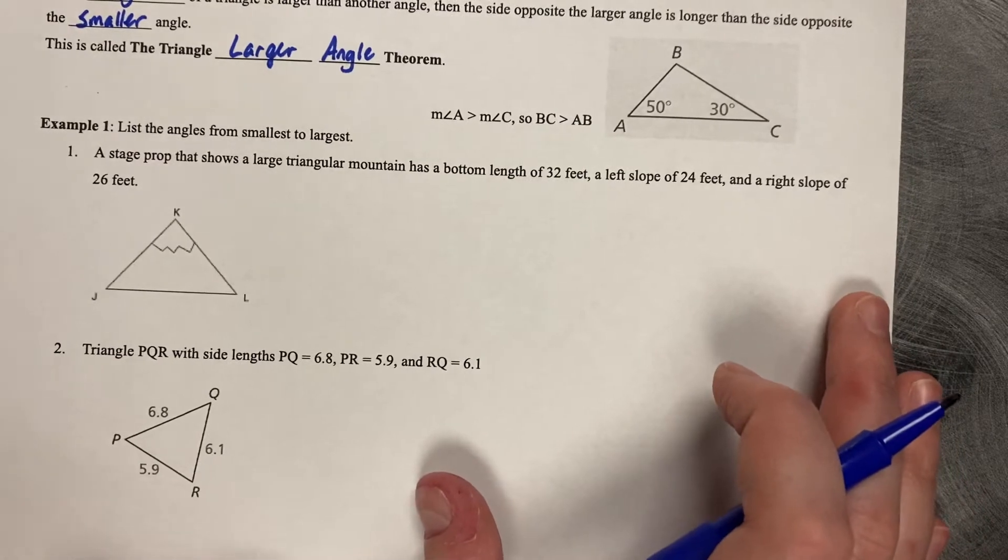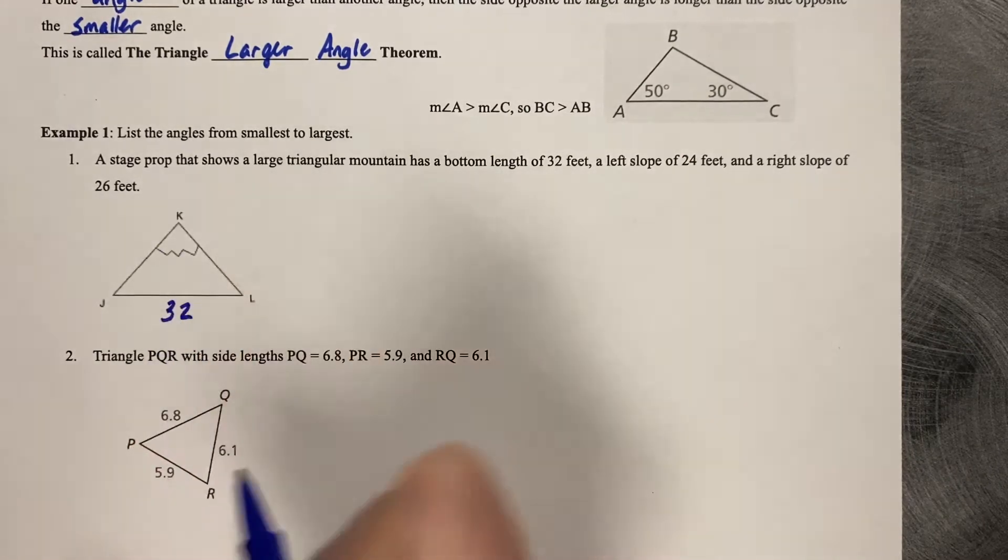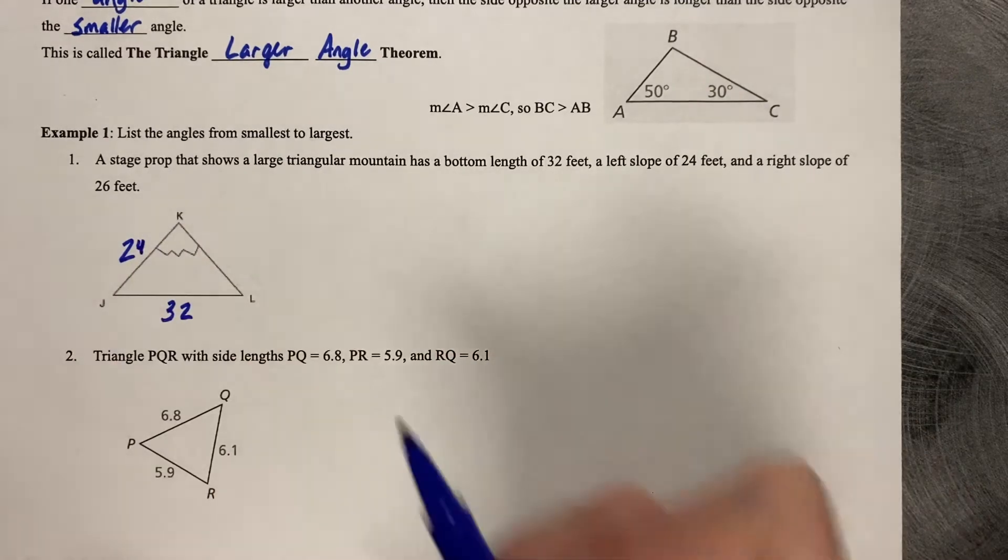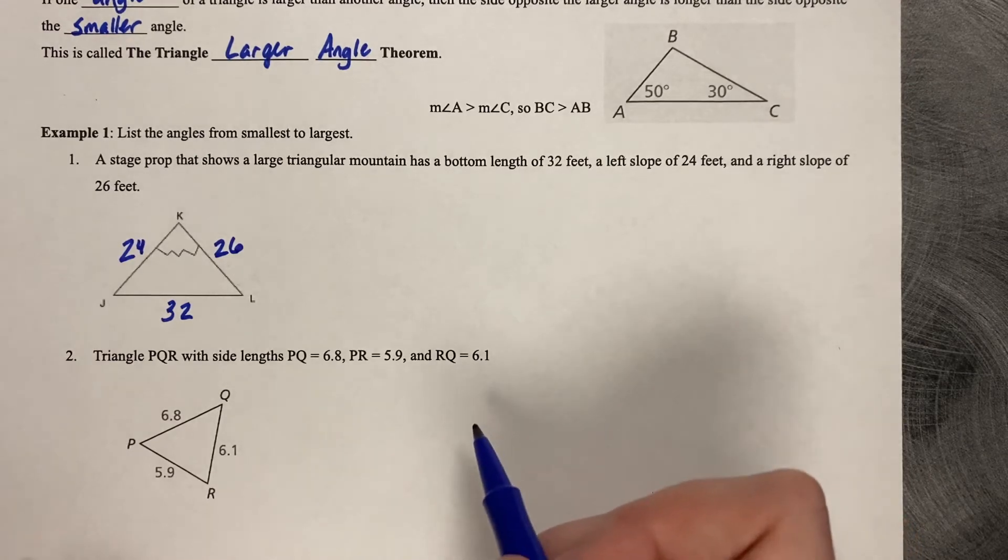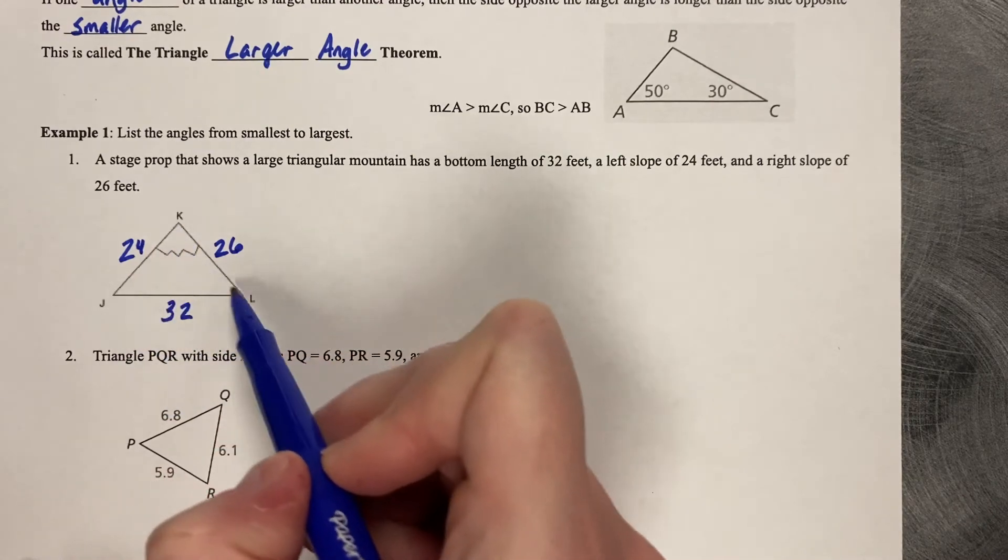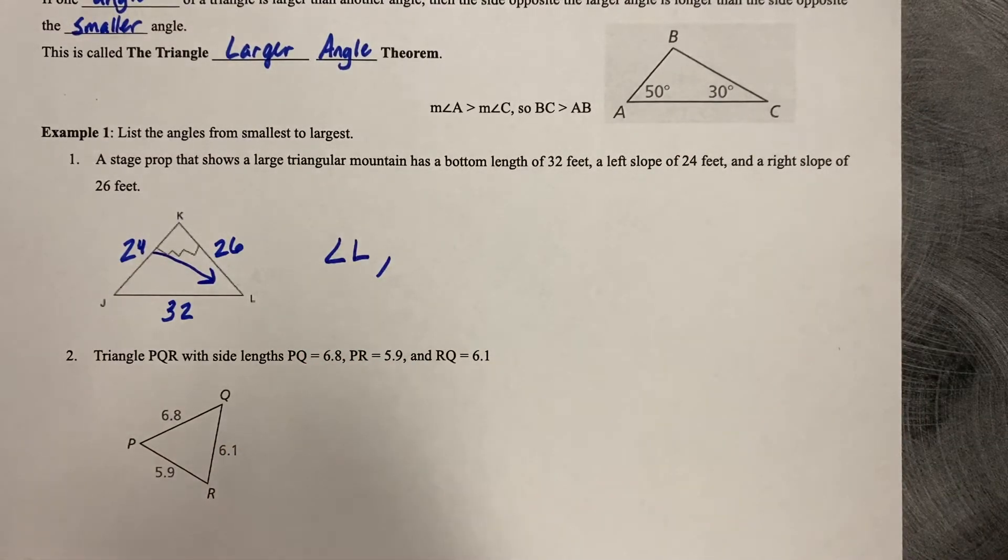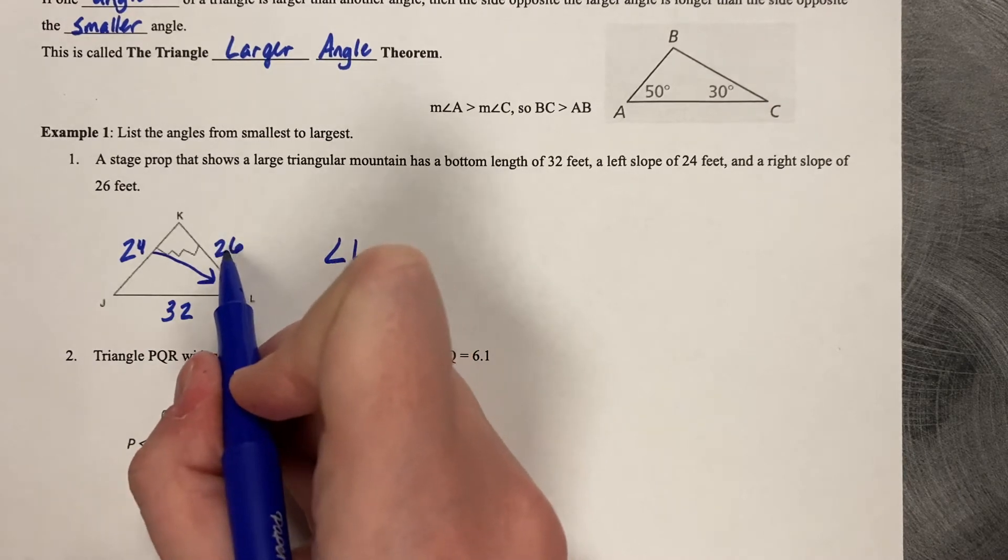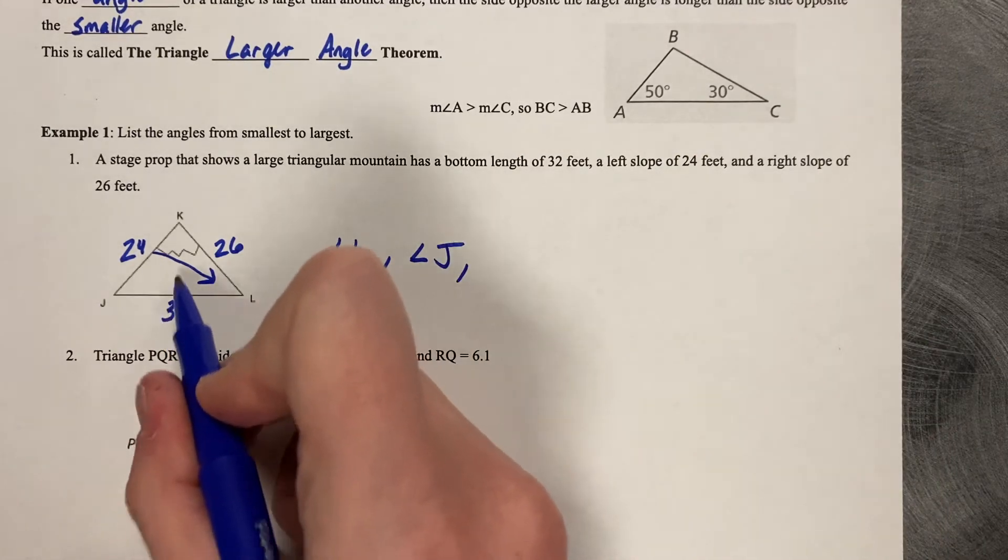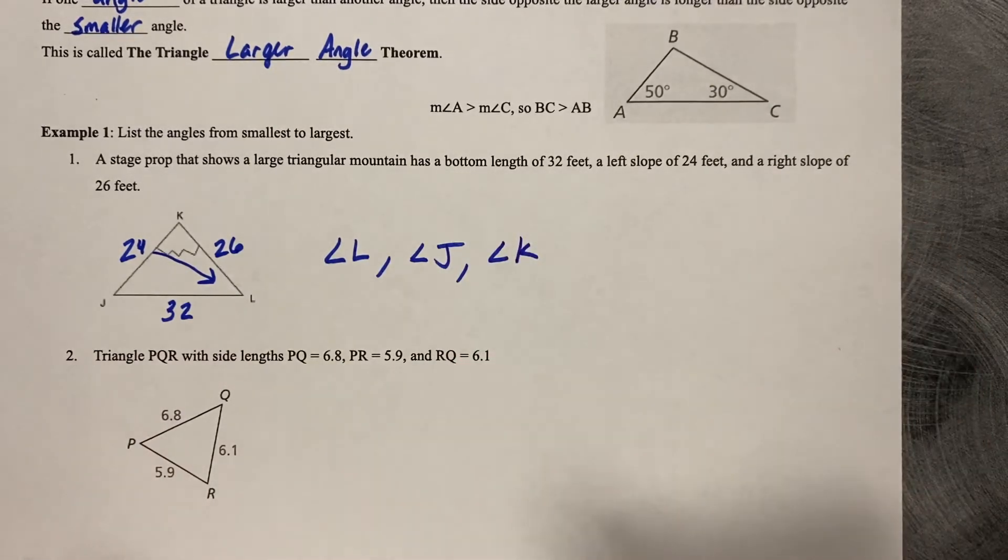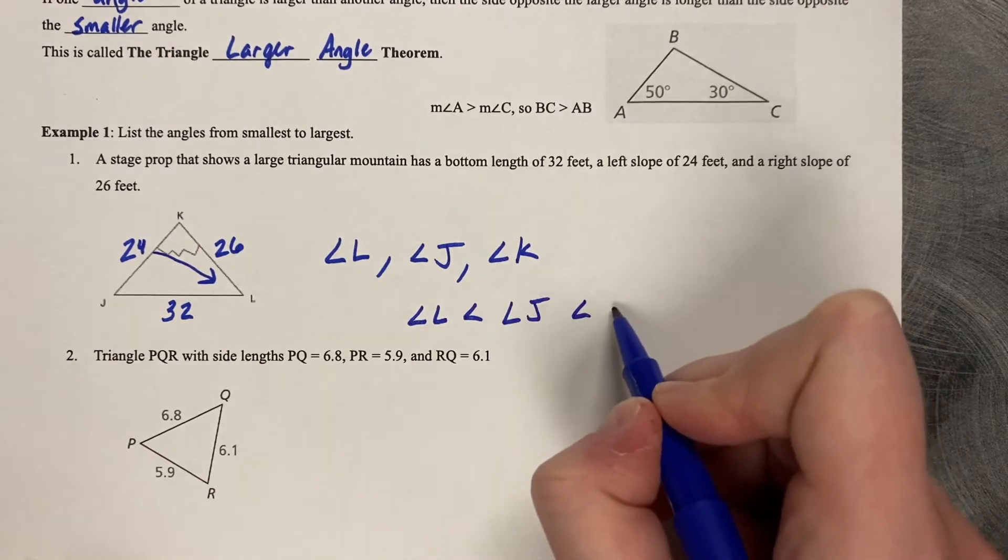Example 1. List the angles from smallest to largest. A stage prop shows a large triangular mountain has a bottom of 32, left slope of 24, and a right slope of 26. We would like to list these angles from smallest to largest. So what you're looking for is the smallest side. JK is the smallest side, and that is opposite of L. So angle L is the smallest angle. Now we look for the next smallest side. The next smallest side is 26. 26 is opposite of angle J. And finally, that leaves us with our longest side, 32, which is opposite of angle K.